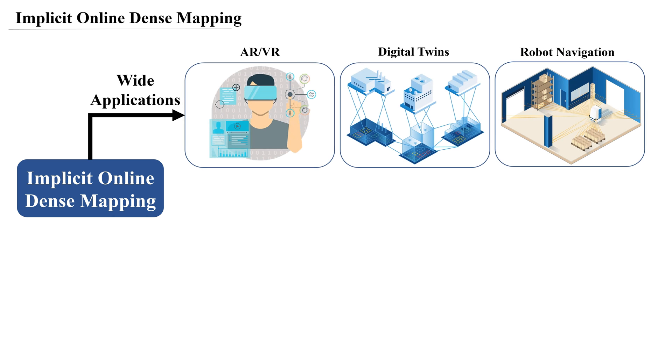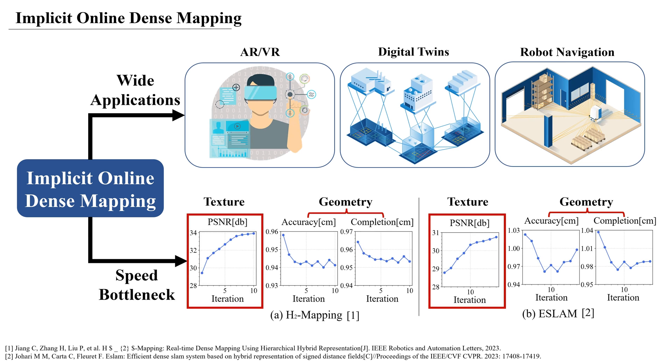Recent advances in implicit online dense mapping have led to high-quality reconstructions, showing promise for wide applications. However, existing methods face a bottleneck in real-time performance due to slower optimization of texture compared to geometry.